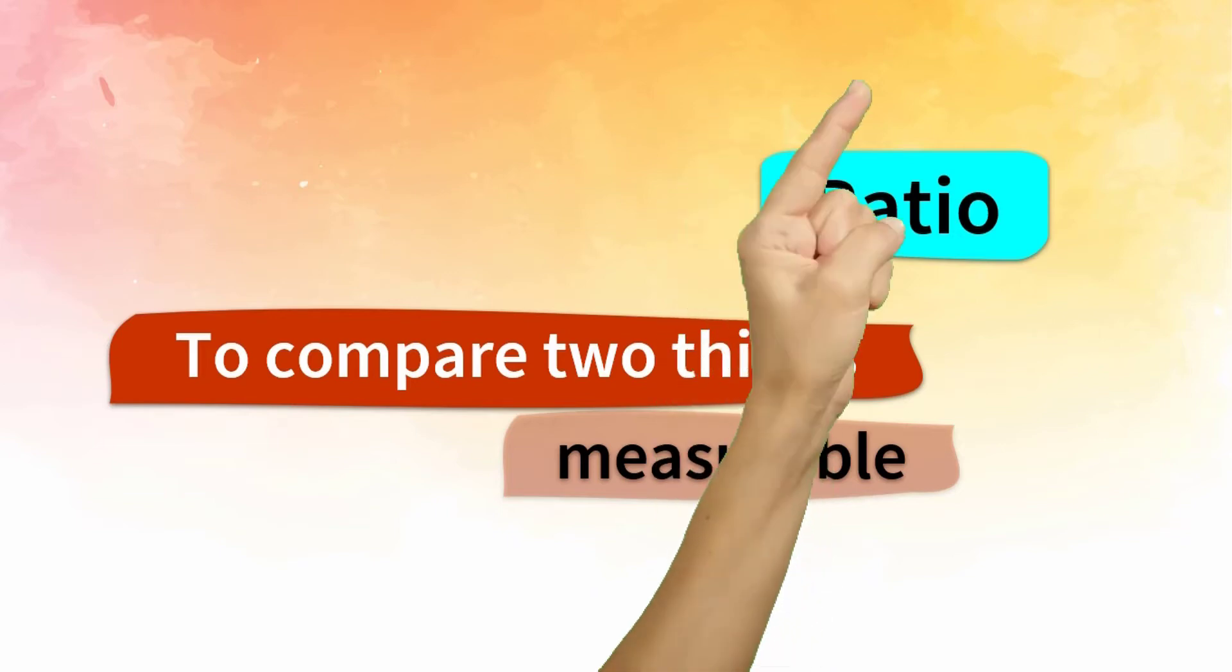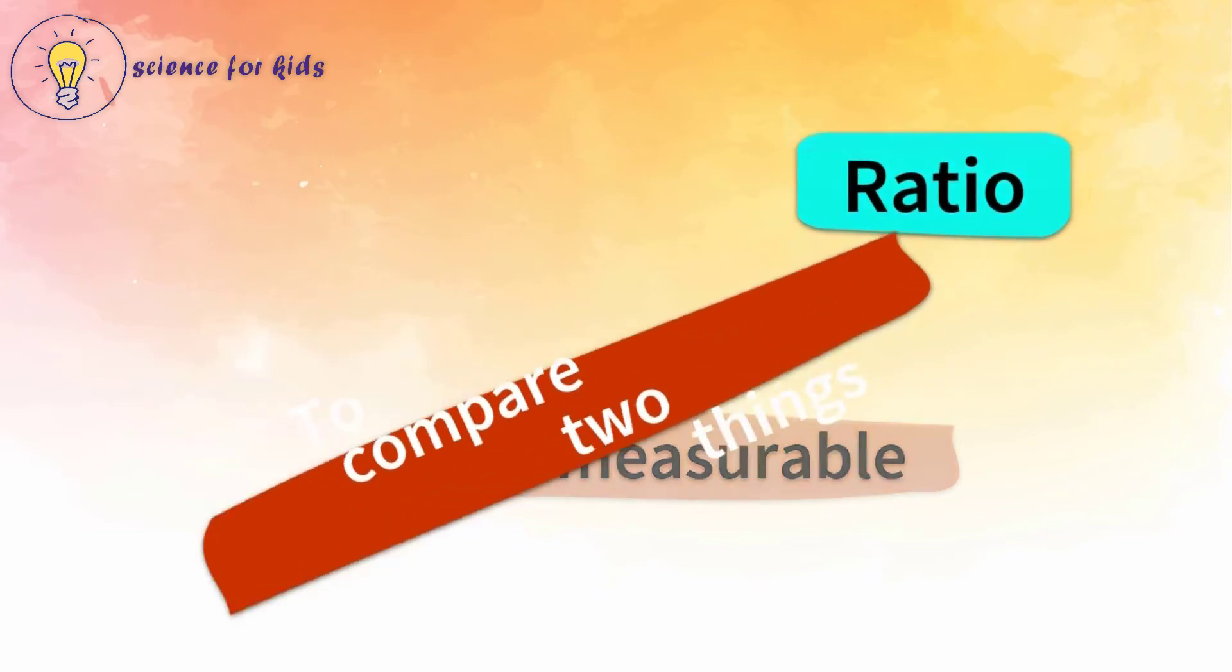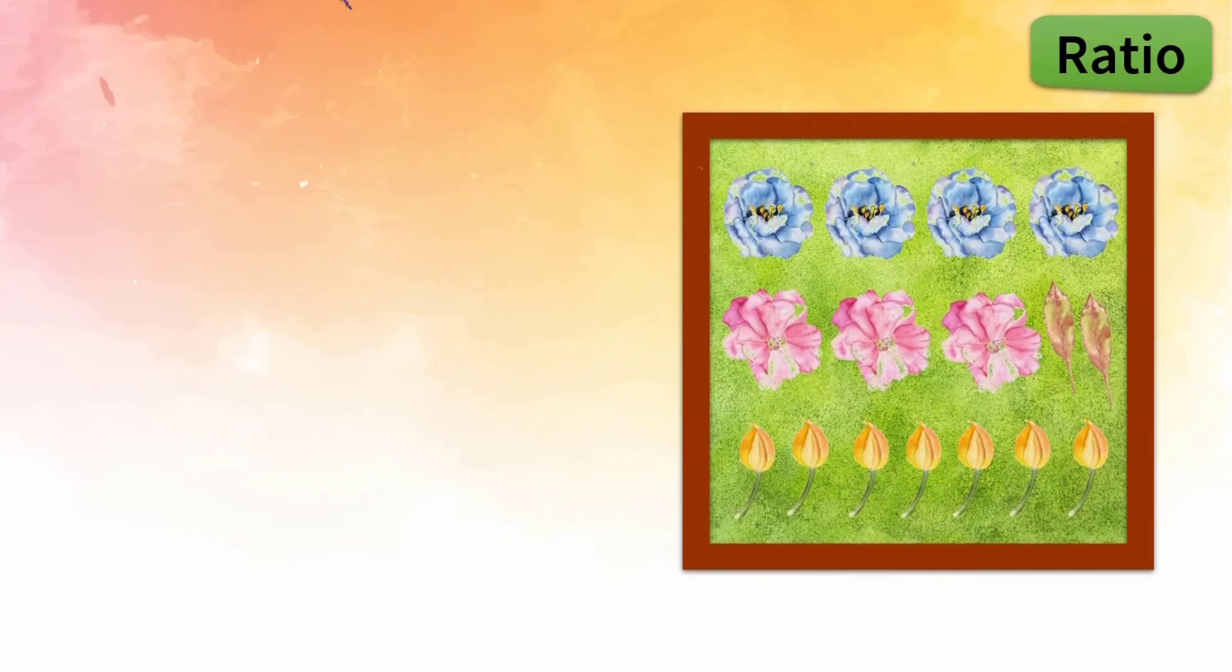We use the previous section to introduce the question of how we compare things in maths. To answer this question, let's take a look in my little garden. I planted different types of flowers on it. Blue, pink, and yellow flowers with two dry leaves are visible on it.